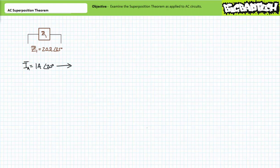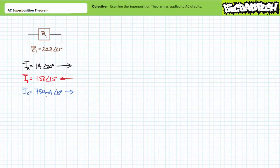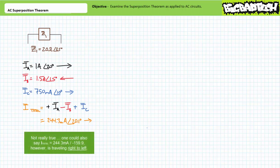If your results indicate source A pushes 1 amp at an angle of 20 degrees through a 20-ohm impedance at an angle of 25 degrees left to right, and source B pushes 1.5 amps at an angle of 15 degrees through the same impedance right to left, and source C pushes 750 milliamps at an angle of 10 degrees through the same impedance left to right, the summation of these three currents accounting for phase shift and direction is 244.3 milliamps at an angle of 20.1 degrees going left to right, and any other answer is wrong.